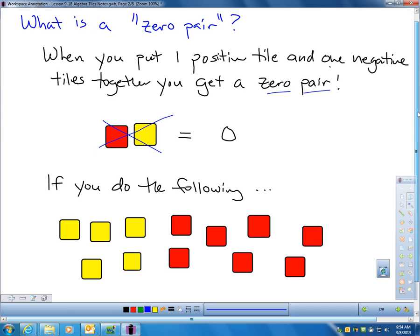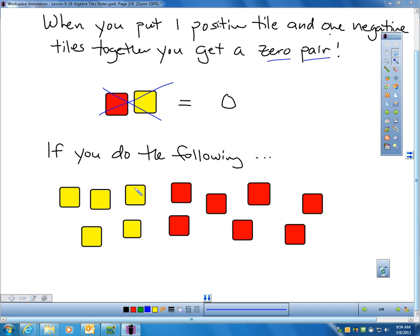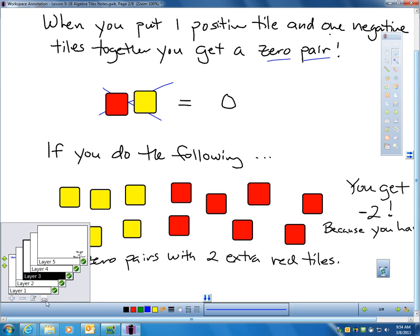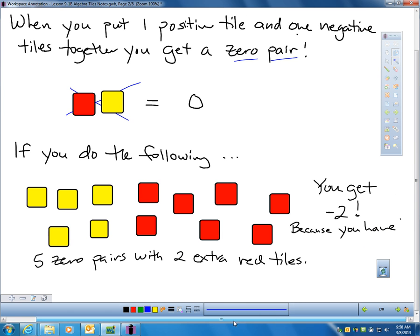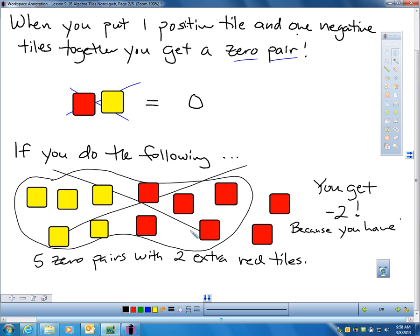If you took out 5 yellow tiles, so I have positive 5, and I took out 7 negative tiles and put them together, I am going to get 2 extra red tiles. These 5 yellow tiles will pair up with these 5 red tiles and create a zero pair. I'm left with 2 red tiles, which means I'm taking 5 plus negative 7, and I'm getting negative 2.